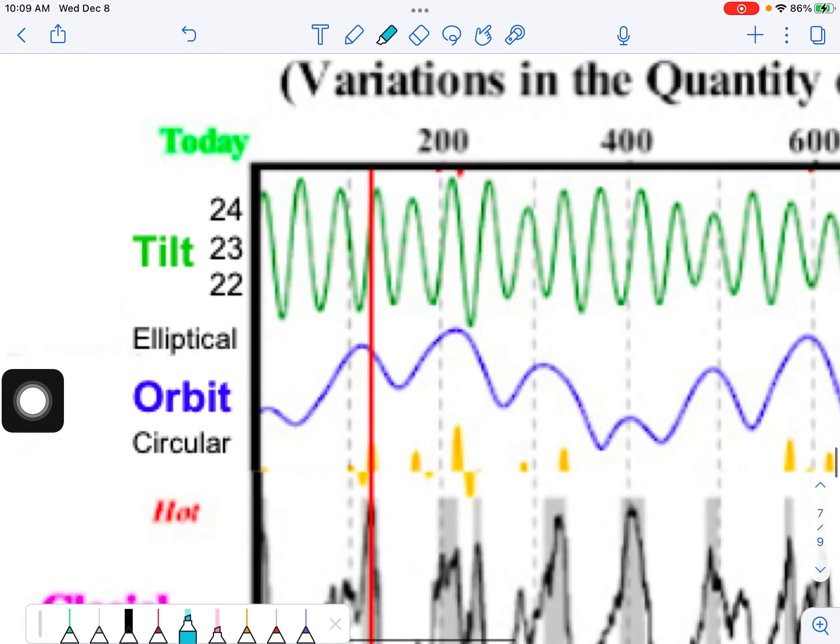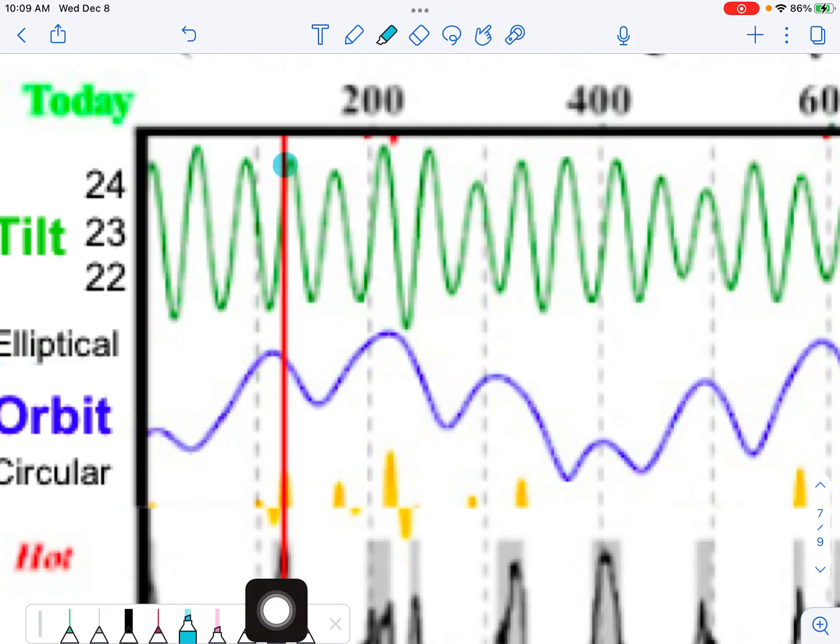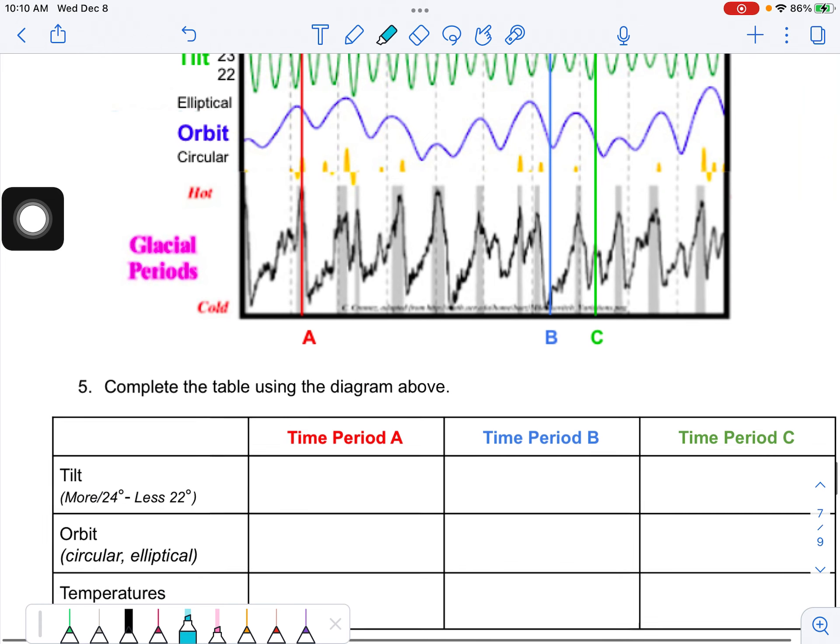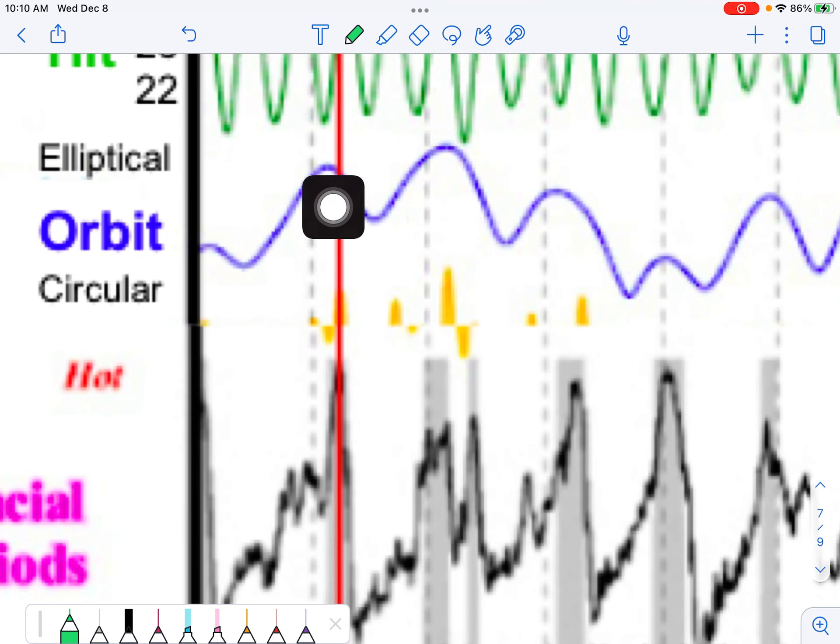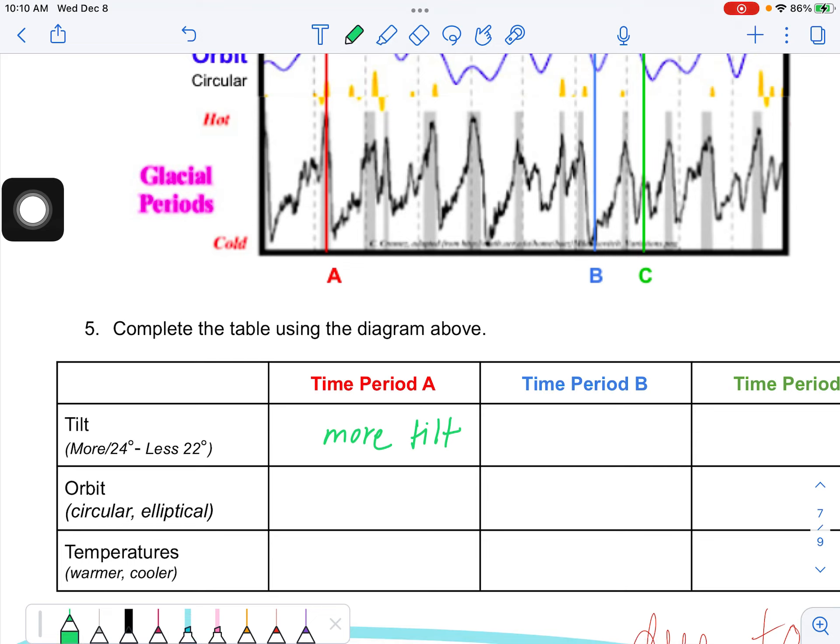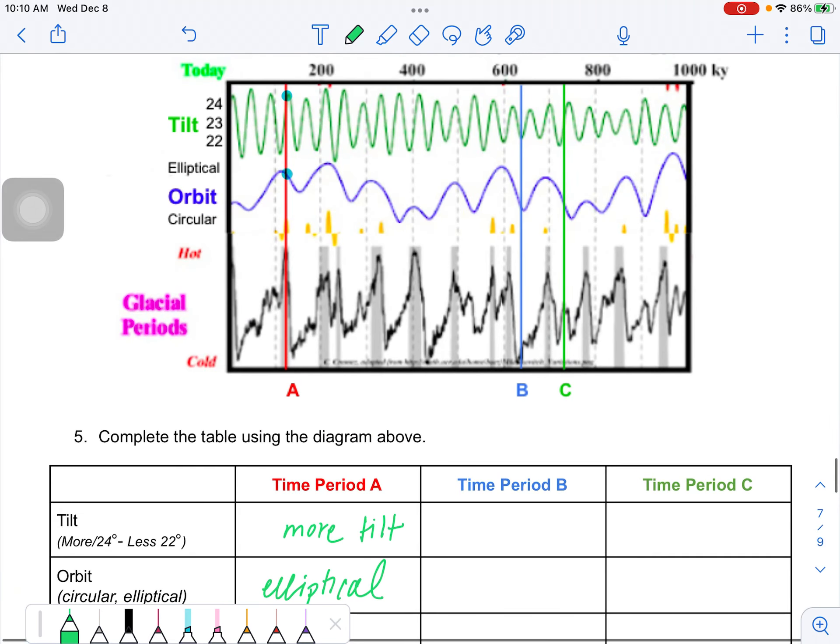Looking at the tilt, well, I see A line is crossing tilt right here. So when I read what tilt that is, well, that's a time of greater tilt. So I would record in my table more, right? More tilt. Looking at time A, the orbit, right? It's crossing the orbit path here. So when I look at the scale of orbit shape, that's going to be more on the elliptical side. So I'm going to say elliptical, right?